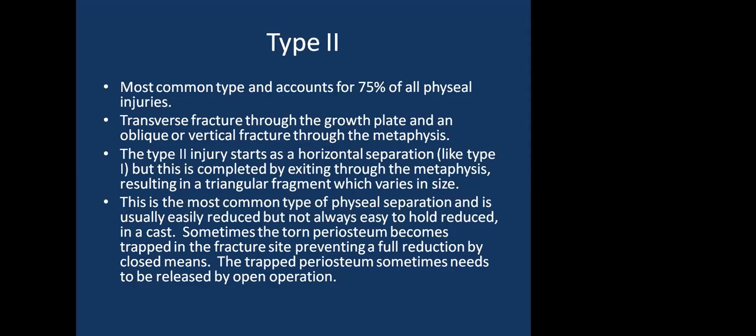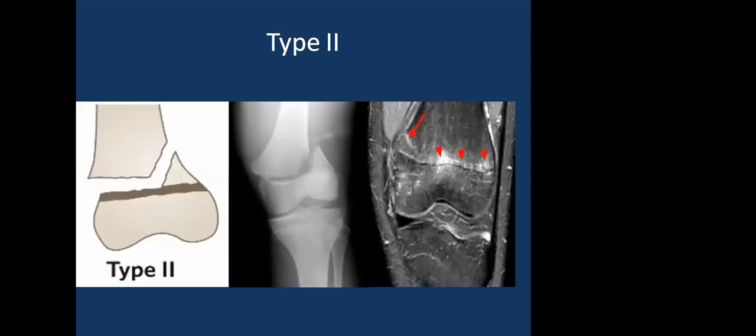In type 2, epiphyseal separation is usually easily reduced, but not always easy to hold reduced in a cast. Sometimes the torn periosteum becomes trapped in the fracture site, preventing full reduction by closed means and requiring open operation. This is a type 2 separation of the growth plate with part of the metaphysis, seen on MRI as a fracture line through the metaphysis.